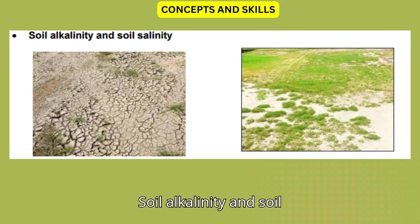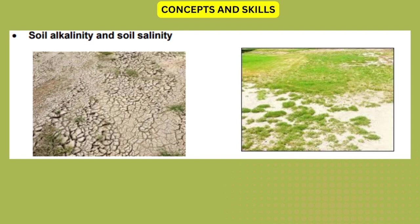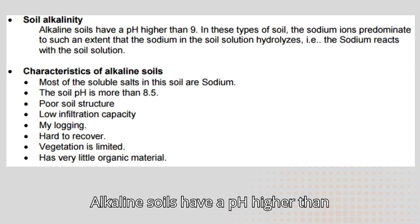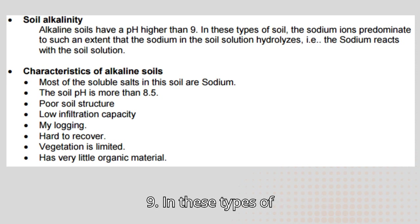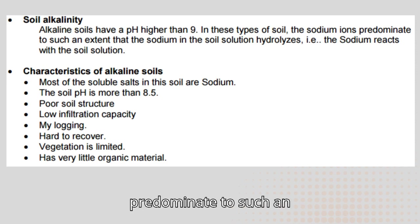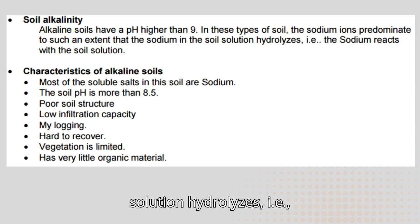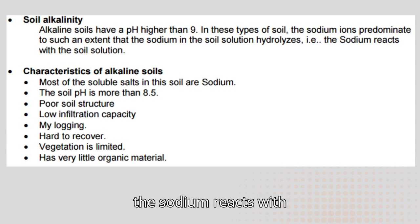Soil alkalinity and soil salinity. Soil alkalinity: alkaline soils have a pH higher than 9. In these types of soil, the sodium ions predominate to such an extent that the sodium in the soil solution hydrolyzes — i.e., the sodium reacts with the soil solution.